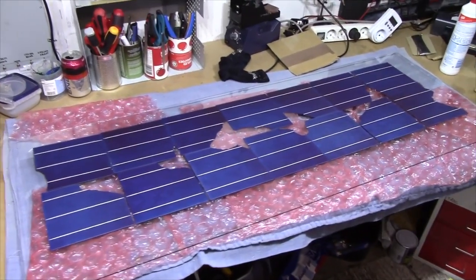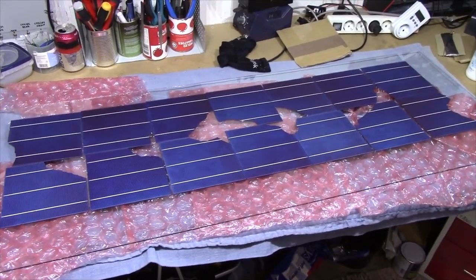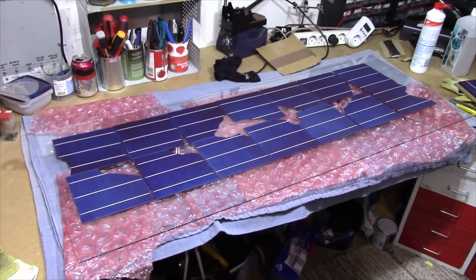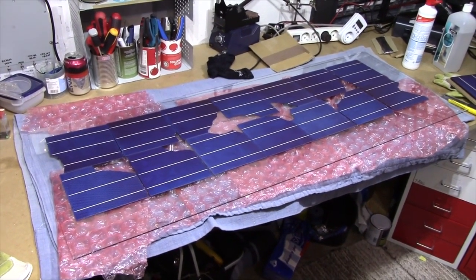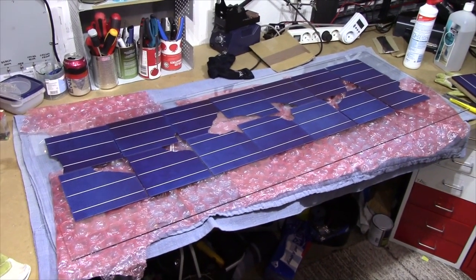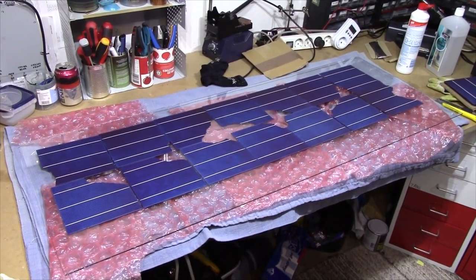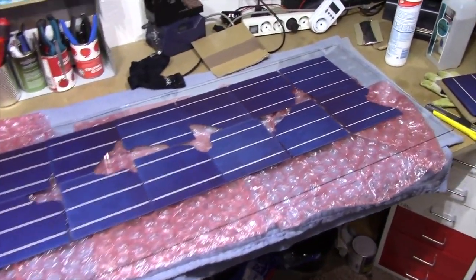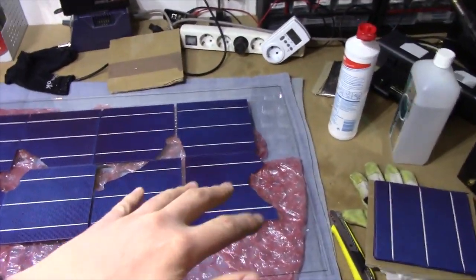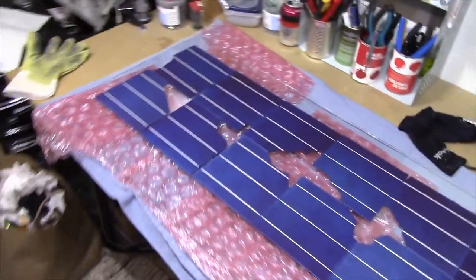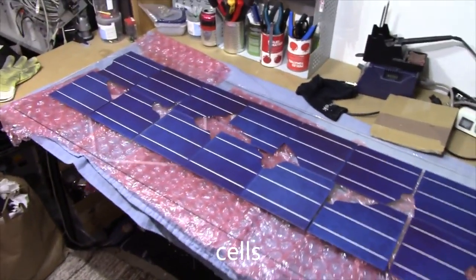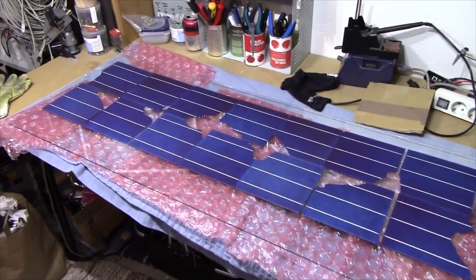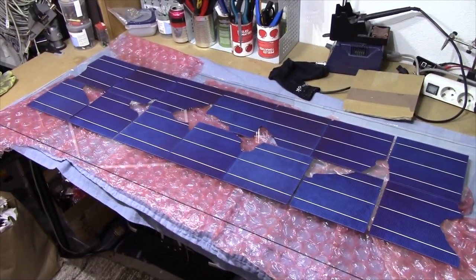So now I've laid down the panels on my sheet of glass in the configuration which would yield the highest energy density. However, this would be 14 panels in series, which would give 7V per panel, which is kind of weird. So I think I'm going to disregard the two in the end and go with 12 panels in series for 6V per panel.